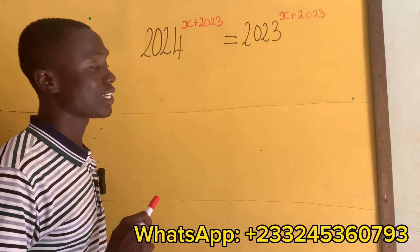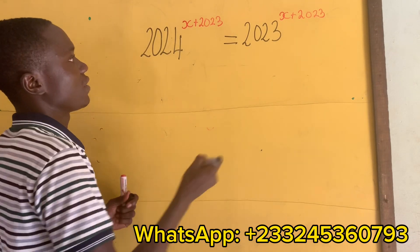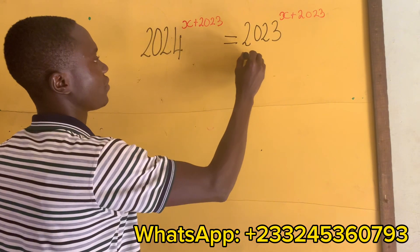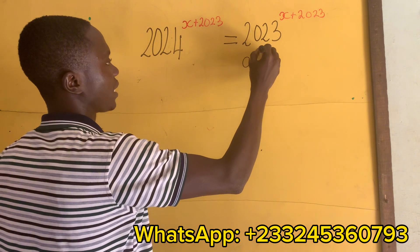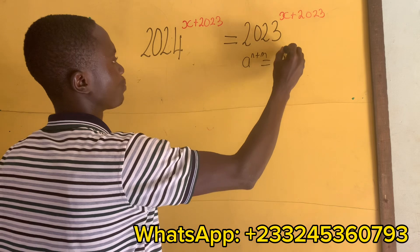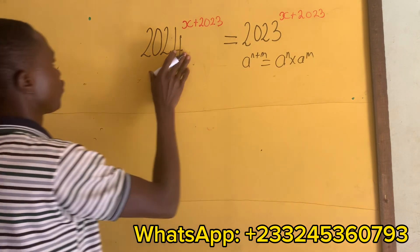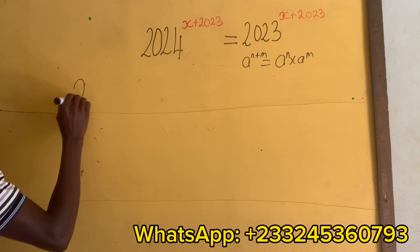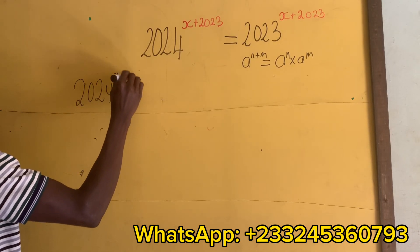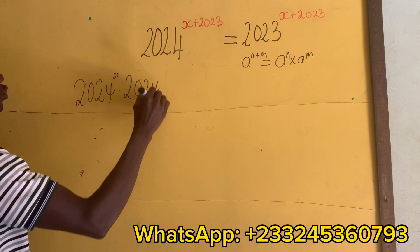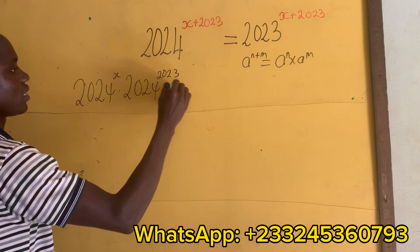This is a very nice Olympiad question. We'll use the law of exponents: if I have a exponent n plus m, then I have a exponent n times a exponent m. From here, I'm going to have 2024 exponent x times 2024 exponent 2023.